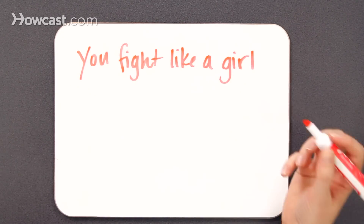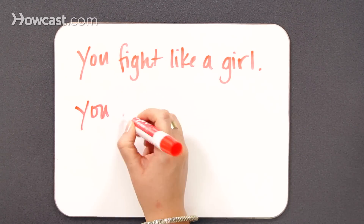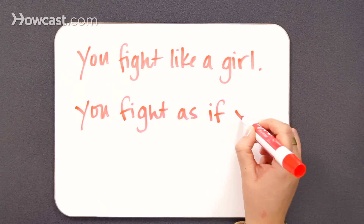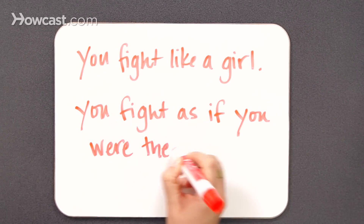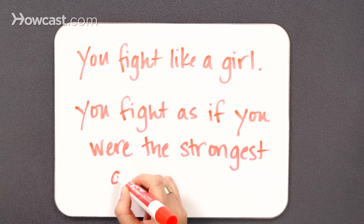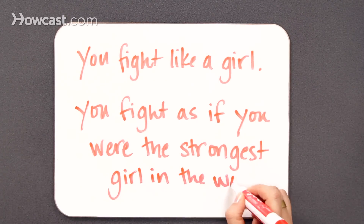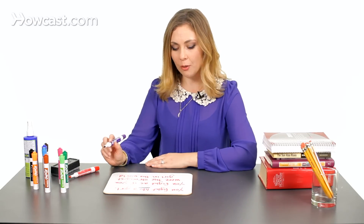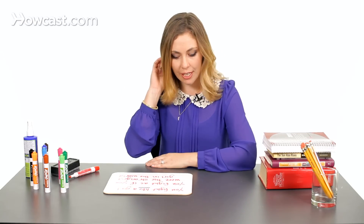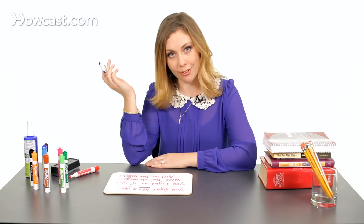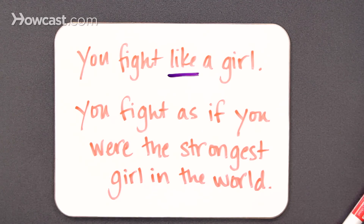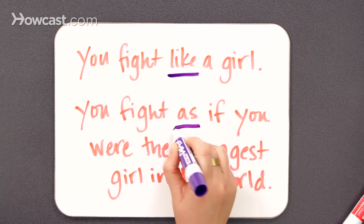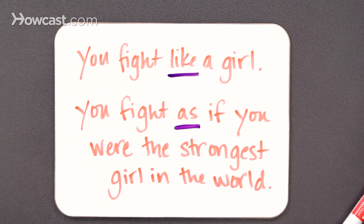Now I'll give you an example of how we might use like or as in a sentence. We'll start with like. I might say, 'you fight like a girl.' In this case I need a preposition, and you can hear it would sound a little strange to say 'you fight as a girl.' On the other hand, if I say 'you fight as if you were the strongest girl in the world,' well in this case we need as, the conjunction.